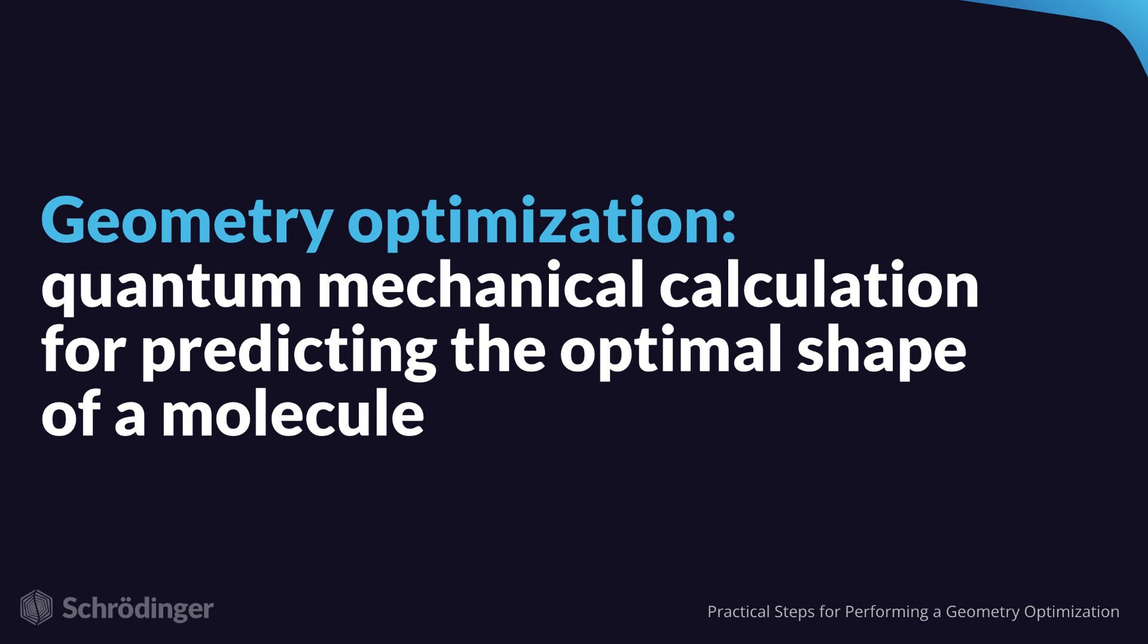Geometry optimization is the quantum mechanical calculation for predicting the optimal shape of a molecule. The typical goal is to find the global minimum. We perform geometry optimizations with JAGUAR.